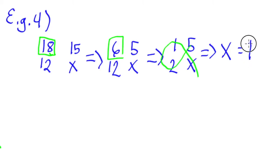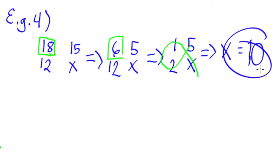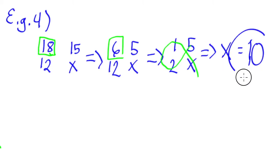So if 18 sacks of something weigh 15 kilograms, then 12 sacks will weigh 10 kilograms.